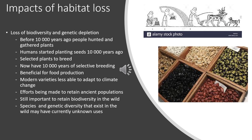Some of the impacts of habitat loss include the loss of biodiversity and genetic depletion. Thinking about agriculture: as early as 10,000 years ago, people were hunters and gatherers, but then began planting crops and selectively breeding seeds. This has been beneficial for food production — we've selected for high-yield varieties — but the genetic base has become narrower and narrower as a result.